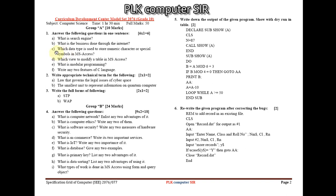For Database, the very short answer questions are: 'Which data type is used to store numeric, character, or special symbols in MS Access?' and 'Which view is used to modify a table in MS Access?' The four short answer questions (f to i) include: 'What is a database? Give two examples,' 'What is a primary key? List two advantages,' 'What is data sorting? List two advantages,' and 'What types of work are done in MS Access using form and query objects?' — totaling 10 marks.